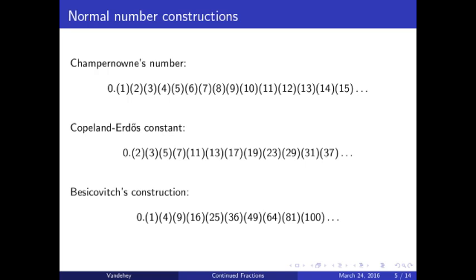The Copeland-Erdős constant deserves some extra focus. These two mathematicians showed that any sufficiently dense increasing sequence of integers, when concatenated, would result in a normal number. Surprisingly, the primes themselves count as a sufficiently dense sequence.